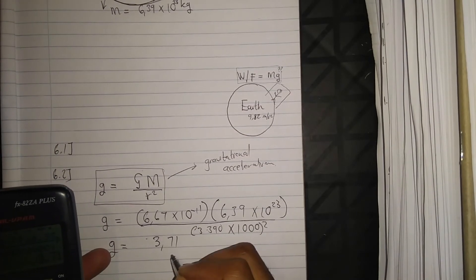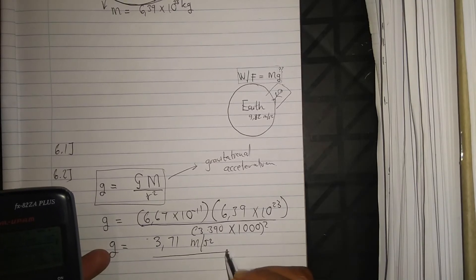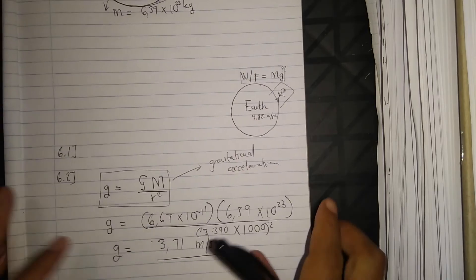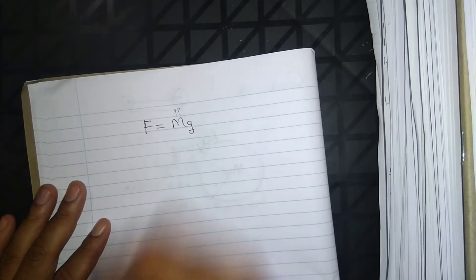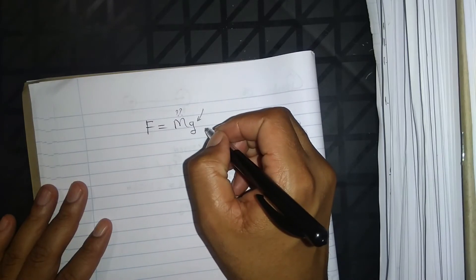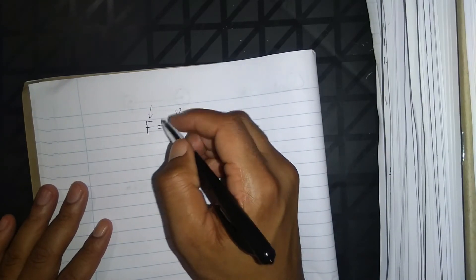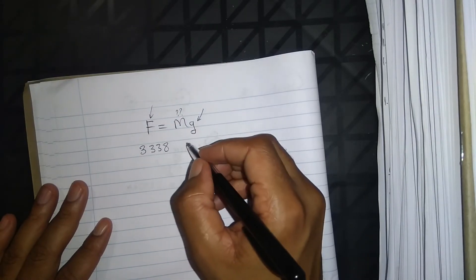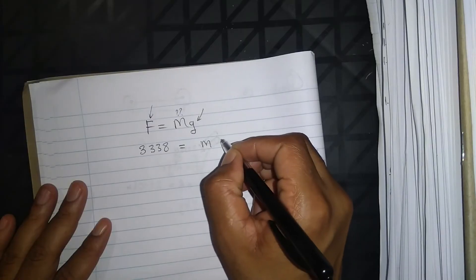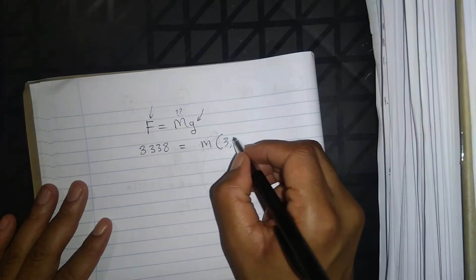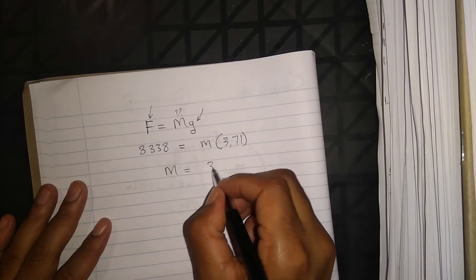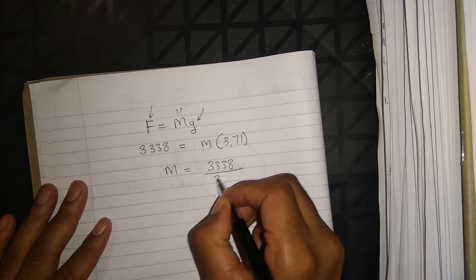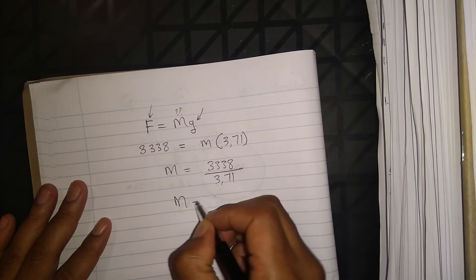The gravitational acceleration for planet Mars works out to 3.71 meters per second squared. Now using F equals mg to find the mass of the probe on Mars: the gravitational force is 3,338 Newtons, mass is unknown, and g is 3.71 m/s².